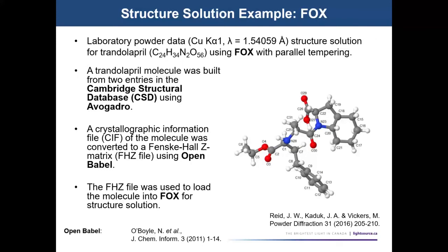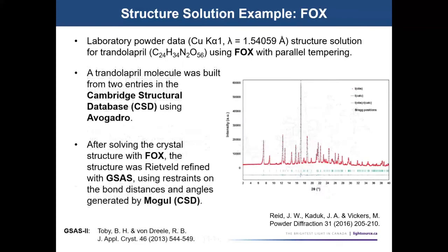I'll typically leave FOX running overnight — 20, 30, 40 runs of 2 million cycles each — then look at the best solutions and see if there are common low-cost solutions that are chemically reasonable. This is the final Rietveld refinement I obtained with GSAS. It was collected on a lab instrument in transmission geometry; the data quality is really high but there's not a lot of data content — it only goes out to about 40 degrees, a d-spacing of about 2.2 Å. You'd have little or no chance solving this with reciprocal space methods.